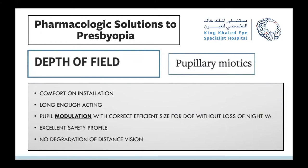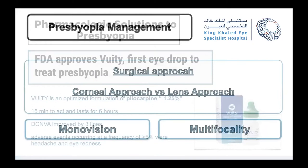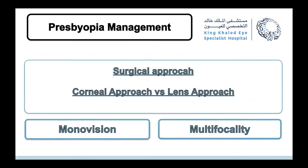The pupillary miotics are an easy, comfortable option, long enough in action. They are called pupil modulators because they modulate the pupil to be small enough to see near without degrading distance vision, with an excellent safety profile. The recently FDA-approved drop — essentially pilocarpine 1.25% — works in 15 minutes and lasts six hours. In the study, patients improved near activities by three lines versus placebo, with minor adverse events: headache and eye redness in about five percent.